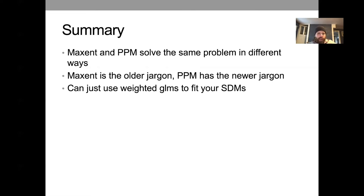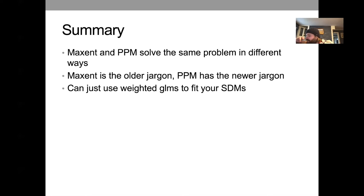The summary: MaxEnt and Poisson point process models solve the same problem in different ways. MaxEnt jargon is older; PPM is newer, but they really are the same thing. People will likely shift toward PPM because regression techniques are more familiar. The practical takeaway: you can just use weighted GLMs to fit your distribution models.